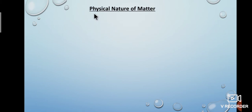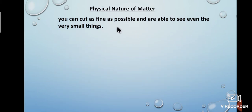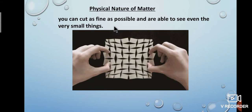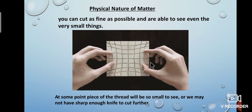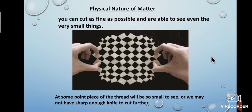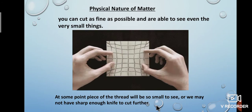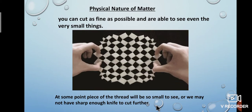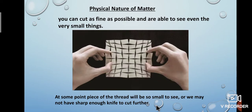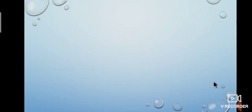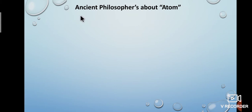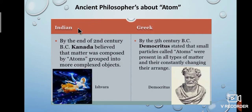Next, we are going to see the physical nature of matter. If you cut something as fine as possible, at some point the piece will be too small to see, or we may not have a sharp enough knife to cut further. Ancient philosophers pondered over such questions. In the 2nd century BC, Indian philosopher Kanada believed that matter was composed of atoms, and that atoms grouped into more complex objects.